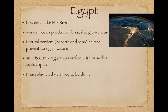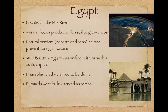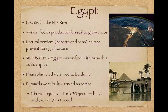Pharaohs ruled ancient Egypt and claimed to be divine — again we see rulers arguing they are divine. Pyramids were built to serve as tombs for pharaohs to help them with their afterlife. Khufu's pyramid took 20 years to build and over 84,000 people were used to construct it. These massive, ginormous pyramids were built to serve as tombs for the pharaohs.